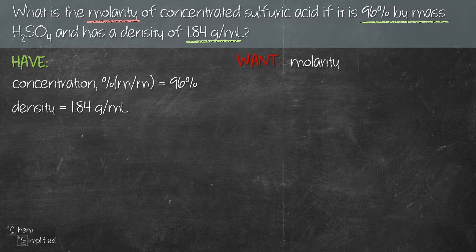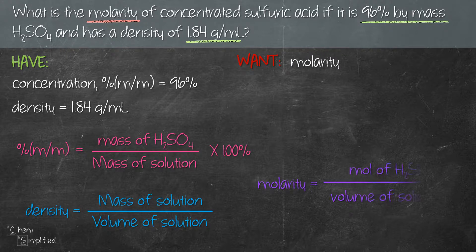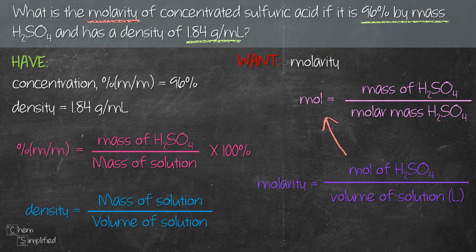Looking at this information, let's pull out the three formulas: percent by mass, density, and molarity. Moles of H₂SO₄ can be calculated by dividing the mass of H₂SO₄ by its molar mass. So we have four formulas altogether.